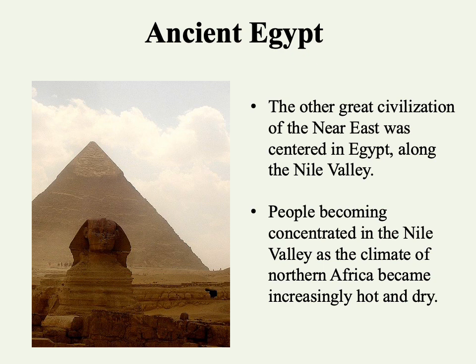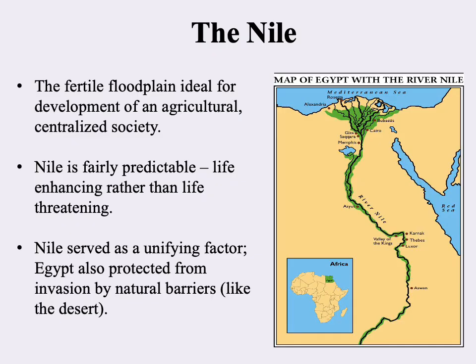This corresponds to the theory we talked about where civilization develops as a response to a challenge presented to a large number of people. As the population grows in the Nile Valley, it creates the material potential for the development of civilization. The Nile is really ideally suited for this — it's a very fertile floodplain, very physically suited for the development of an agricultural centralized society.